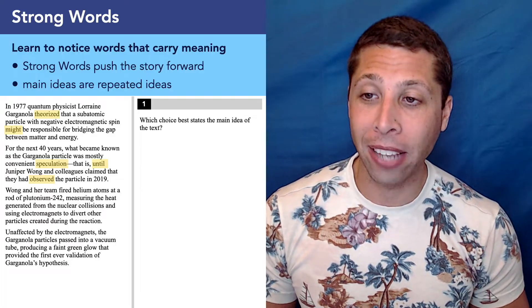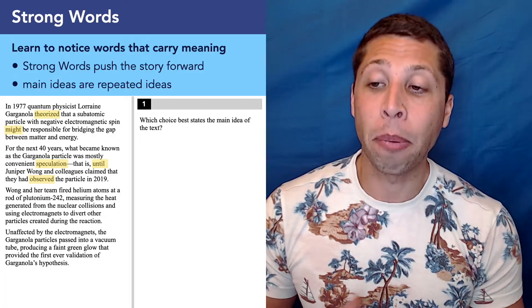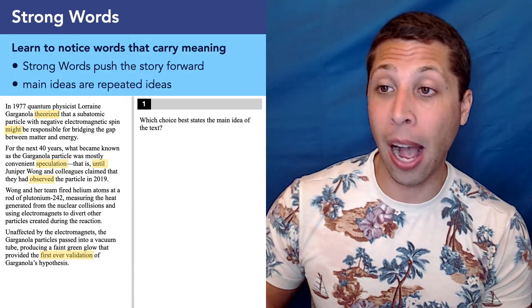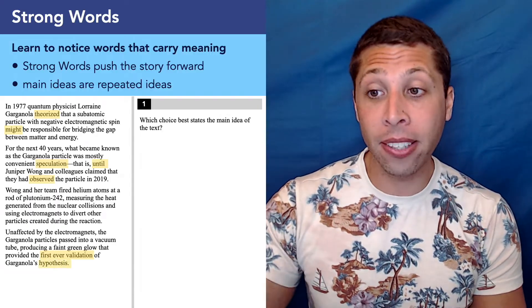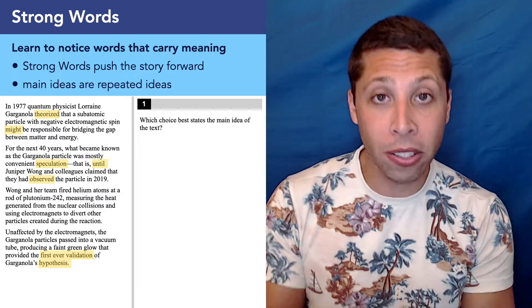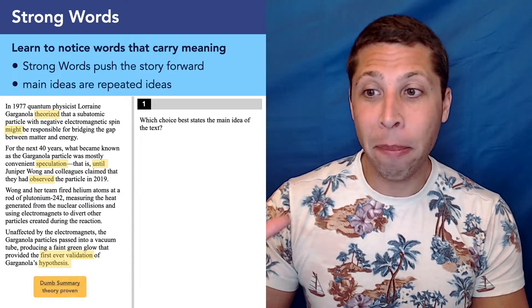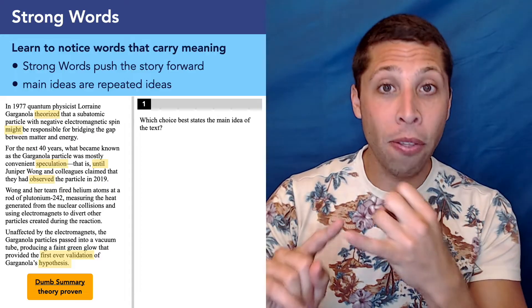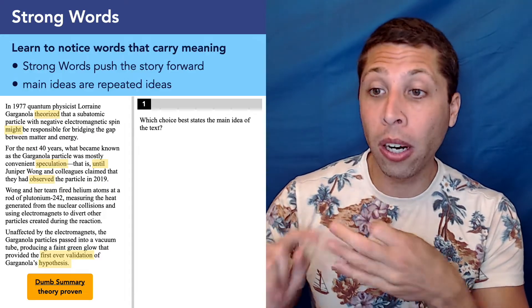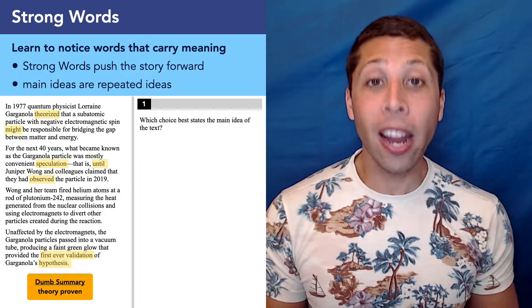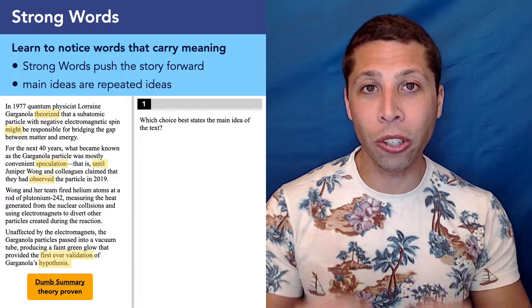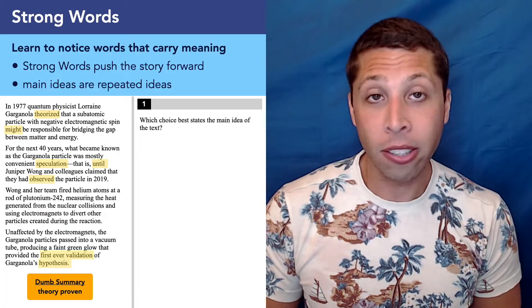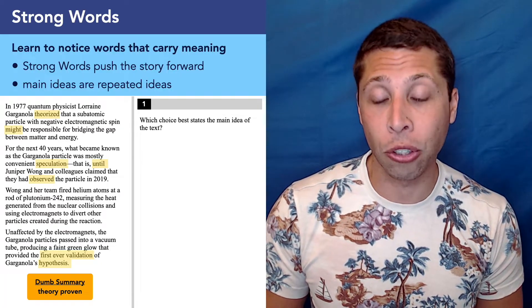Unaffected by the electromagnets, the Garganola particles pass into a vacuum tube, producing a faint green glow that provided the first ever validation of Garganola's hypothesis. So validation matches nicely with the observation that we've now proven this thing. And hypothesis calls back to the idea that it was a theory at first, it wasn't proven. So this whole story is about a theory being proven. That's my dumb summary. Notice, my summary does not include what the theory was, what the details of the particle were. It does not include the experiment that did the proving. I don't care. That's not what this is going to be about.